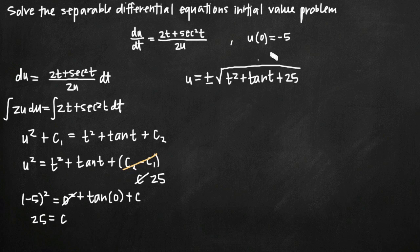This problem is special because if we plug in our initial condition again—if we plug in t = 0—we get 0 + 0 + 25 = 25 under the square root. The square root of 25 is 5, so u = ±5 when t = 0. But our initial condition tells us that when we plug in 0, we should get -5.